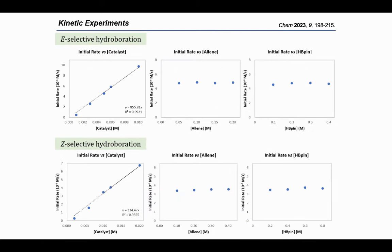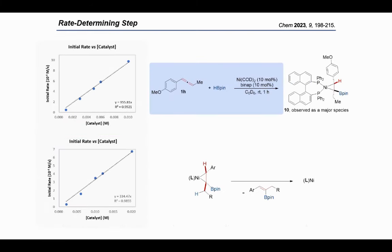Also, we did a series of kinetic experiments. Both of the two reactions show the first-order dependence on the concentration of catalyst and zero-order dependence on the concentration of allene and HB-pin. So, the catalyst is the only factor that can influence the rate-determining step. And nickel-olefin complex can be regarded as the catalyst resting state. The rate-determining step should be the dissociation of alkenyl boronate from nickel-olefin complex to generate nickel-zero fragment.